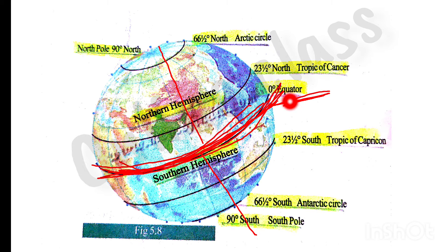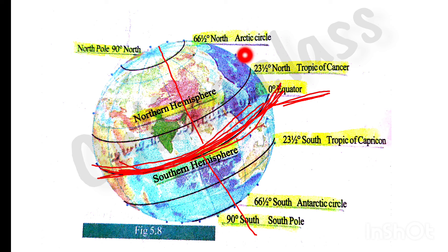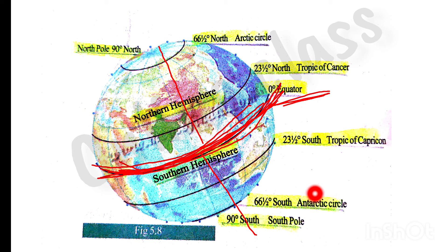We have zero degrees — this is the North Hemisphere. The North Hemisphere is 23 degrees — Tropic of Cancer. It is 66 degrees — the Arctic Circle. The Arctic Circle is 23 degrees. This is the Tropic of Capricorn. This is the Antarctic Circle. This is 90 degrees — South Pole. This is the North Pole.